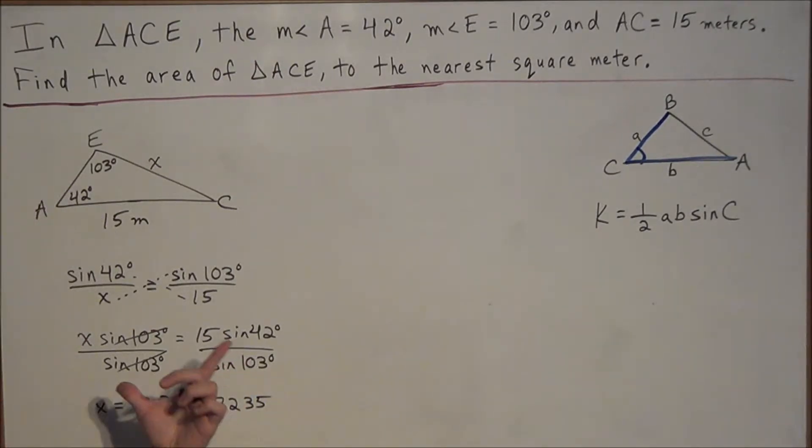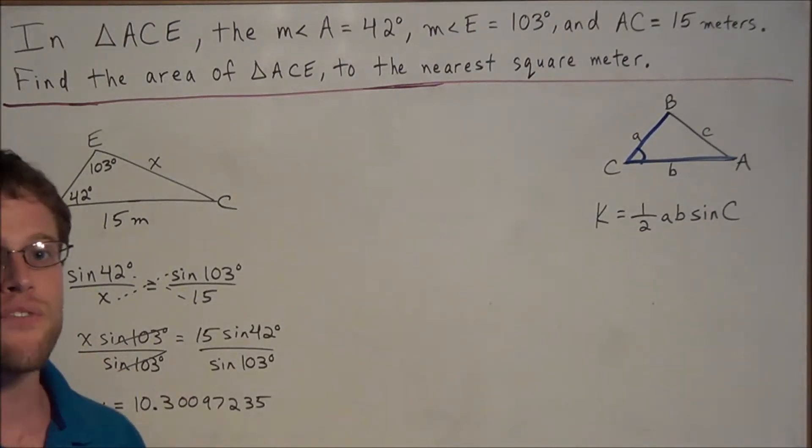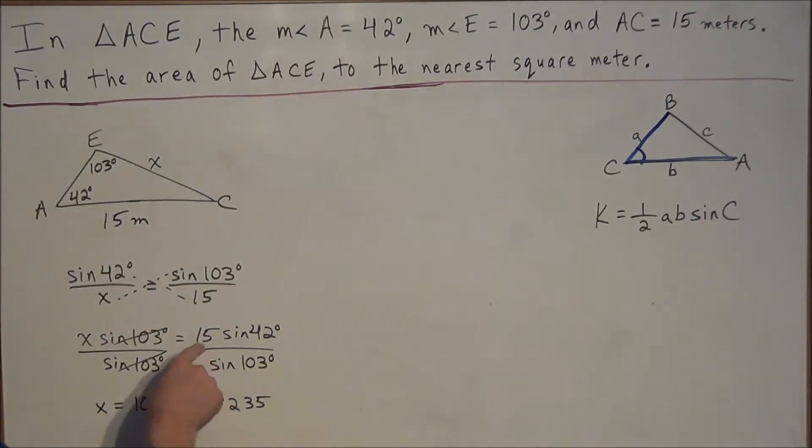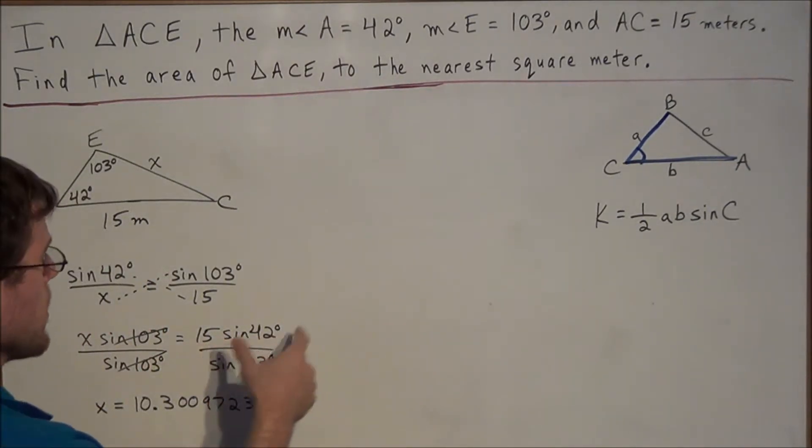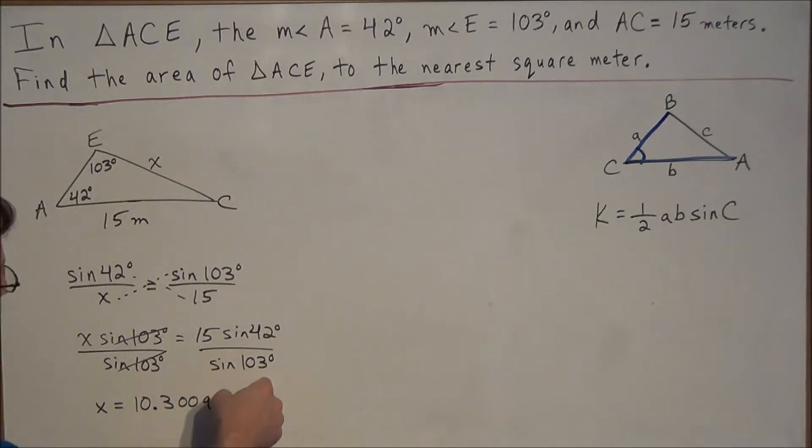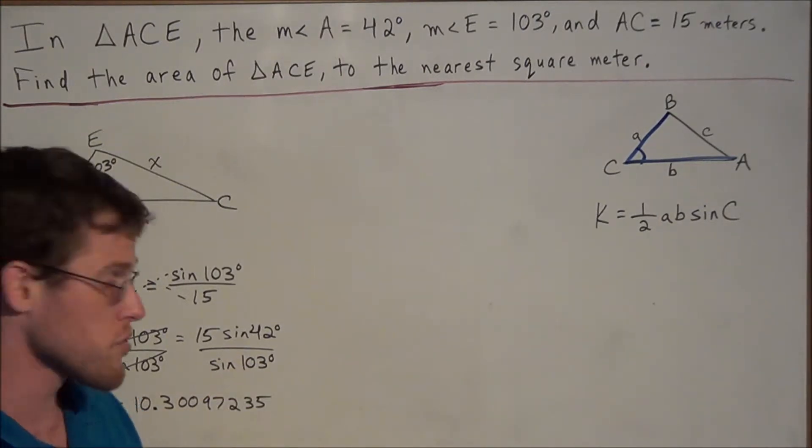And this tells us that x is equal to 10.30097235. One thing to point out is that I prefer to type the final product in the calculator, 15 sine 42 divided by sine 103. But if you want to type it in at this step, you can. I just find it easier to just do it all in one shot. So you could write 15 sine 42, hit enter, and divide by sine 103 degrees. But make sure you're in degree mode also.